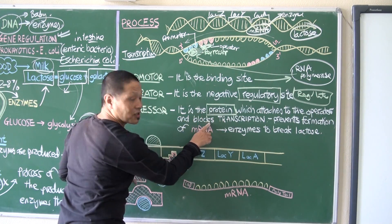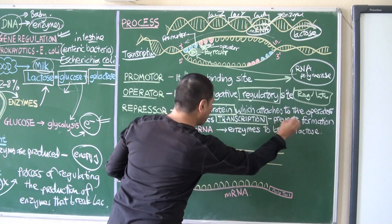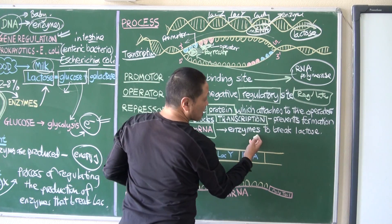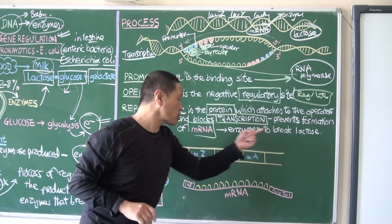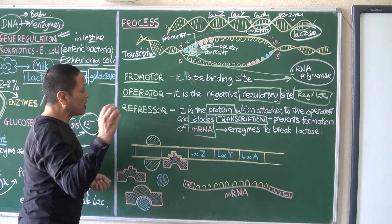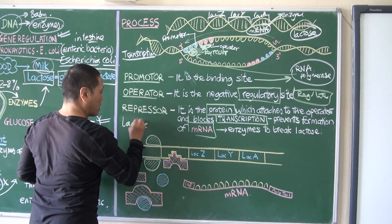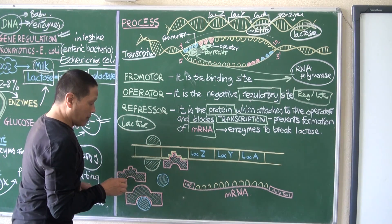Here is the operator - it is fixed on the operator and it blocks transcription. It prevents the formation of mRNA and enzymes to break lactose. Enzyme to break lactose comes from this mRNA. But in case where there is lactose in the food,